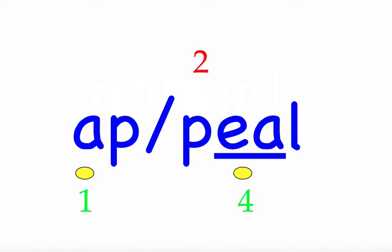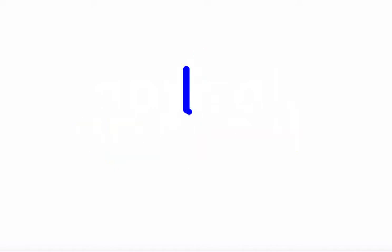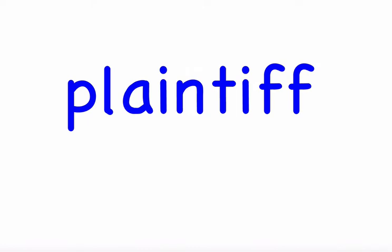The next word is 'plaintiff.' The plaintiff brought suit against the defendant. First syllable 'plain' — four sounds, P-L-A-I-N. Second syllable 'tiff' — three sounds, T-I-F-F. Mark the word. Plaintiff.